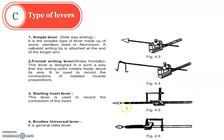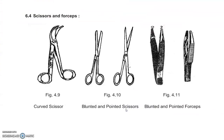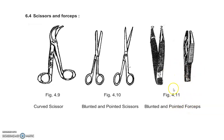Scissors and forceps are also used and may appear in spotting. These include curved scissors and various forceps used to hold tissue or organs — toothed forceps and others. Scissors are used to cut and isolate specific organs, muscles, or tissue.